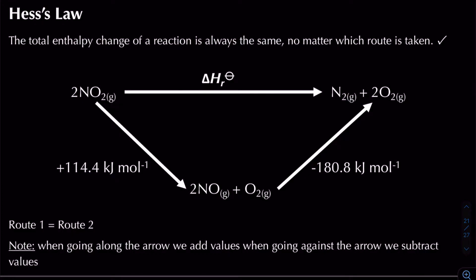To find the enthalpy change of a reaction using Hess's law: if route one equals route two, then going from nitrogen dioxide to nitrogen and oxygen gas is equal to going from nitrogen dioxide to nitrogen monoxide and oxygen gas, and then to nitrogen and oxygen gas. When going along an arrow we add values; when going against arrows we subtract values.